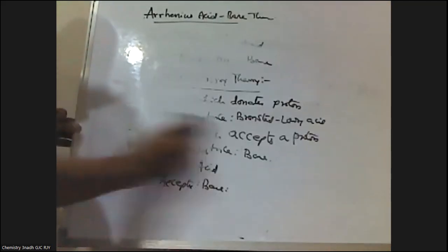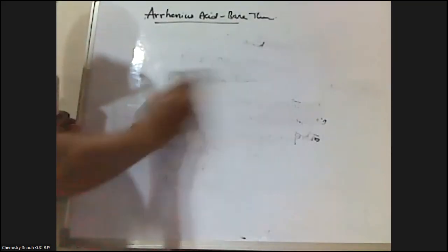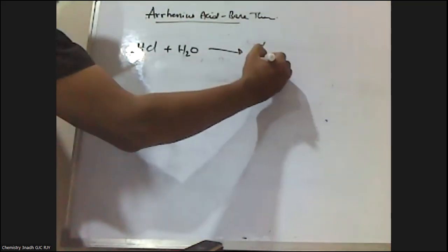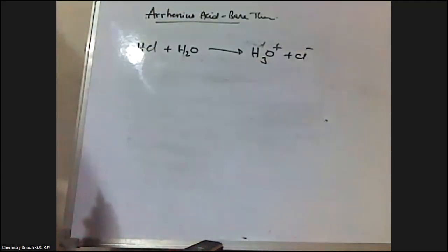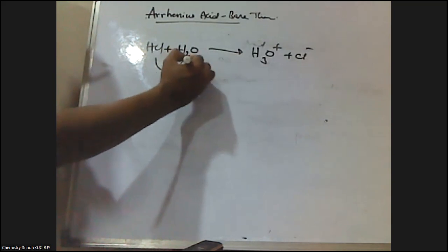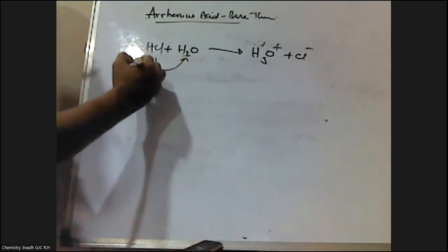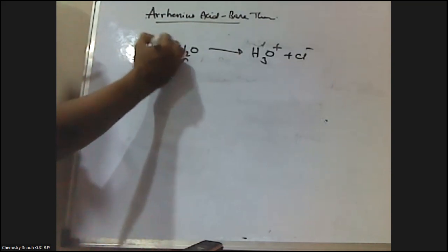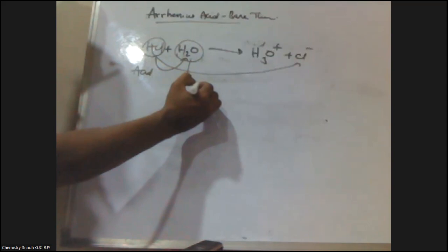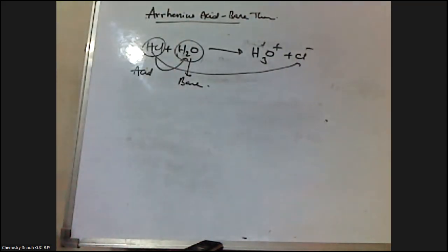Let me explain with some examples. For example, in the reaction HCl + H2O, the HCl molecule donates a proton to water, acting as a Bronsted-Lowry acid, and becomes Cl minus. As H2O accepts the proton from HCl, it is called the Bronsted-Lowry base.